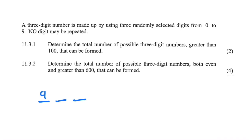Nine possible digits can occupy the first spot — one through nine — since zero cannot. Out of our 10 digits, we've exhausted one. So nine digits can occupy the second spot, because we've only used one digit so far. For the third spot, eight digits can possibly occupy it because there's no special restriction. This gives us 9 × 9 × 8 = 648 possible three-digit numbers greater than 100.